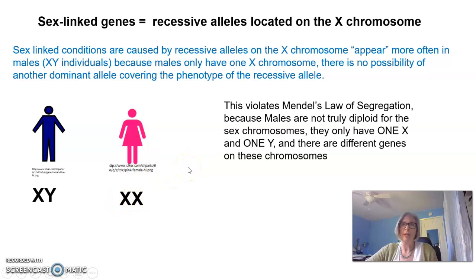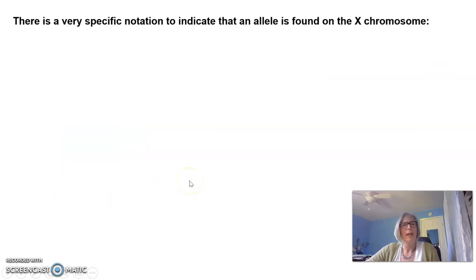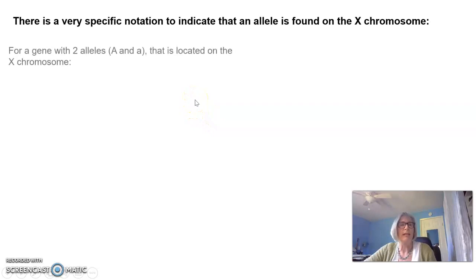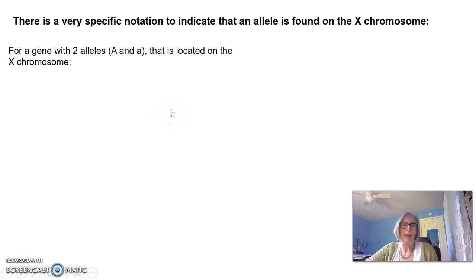Females are truly diploid for their sex chromosomes. Now there's a very specific notation to indicate that an allele is found on the X chromosome and is sex-linked. Let's give an example: a gene with two alleles, big A and little a, that is located on the X chromosome.